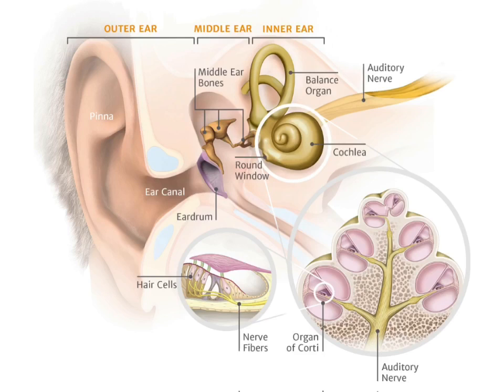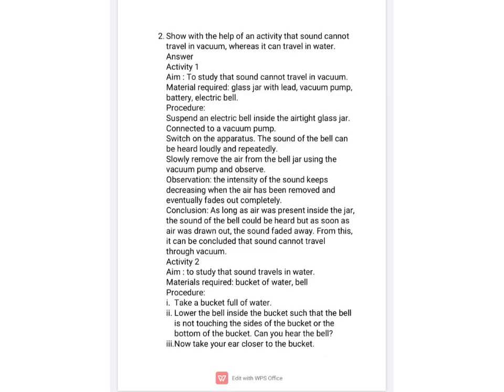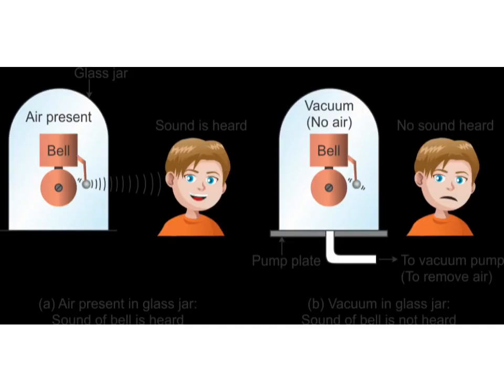This is how sound travels in the ear. The next question asks us to prove with an activity that sound cannot travel in vacuum but can travel in water. To prove that sound cannot travel in vacuum, we take an electric bell, a glass jar, and a vacuum pump. We take out the air present in the glass jar and observe that initially, when air was inside the jar, we could hear the sound, but as we remove the air, we are no longer able to hear any sound.